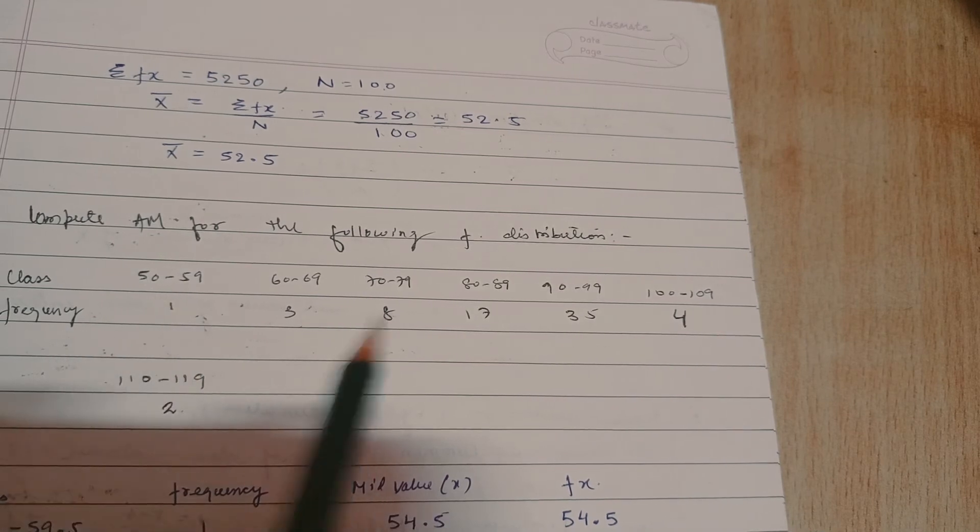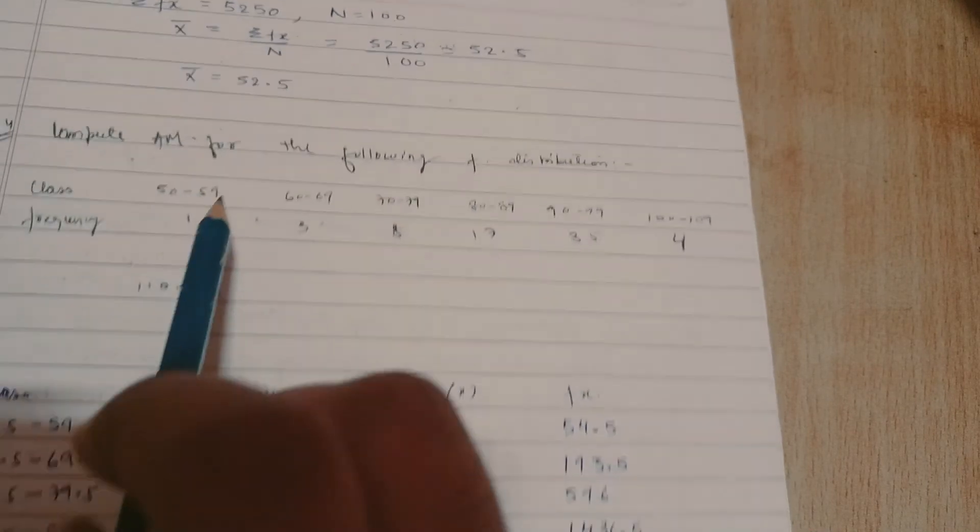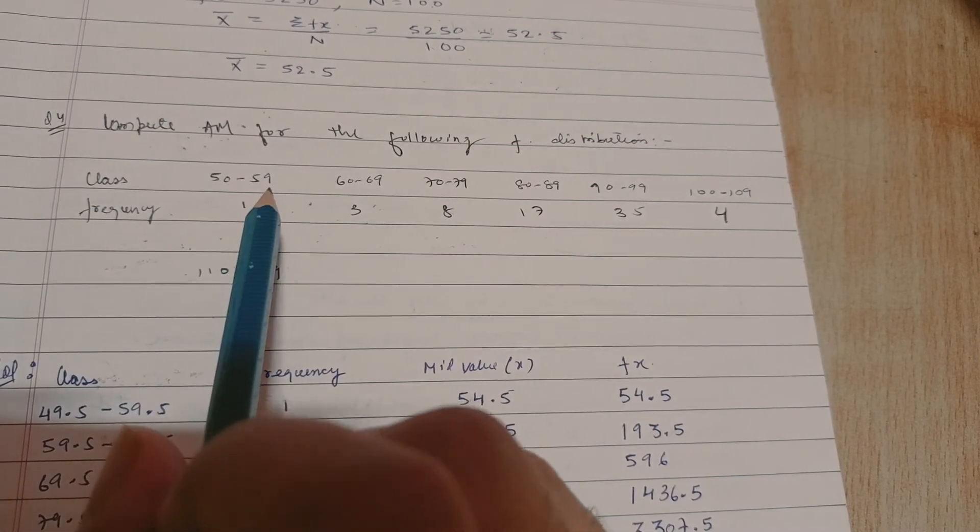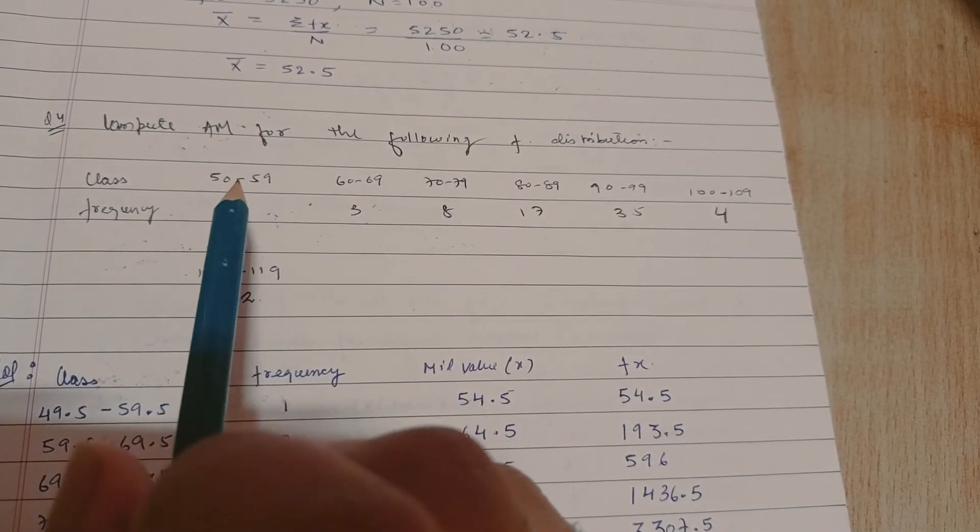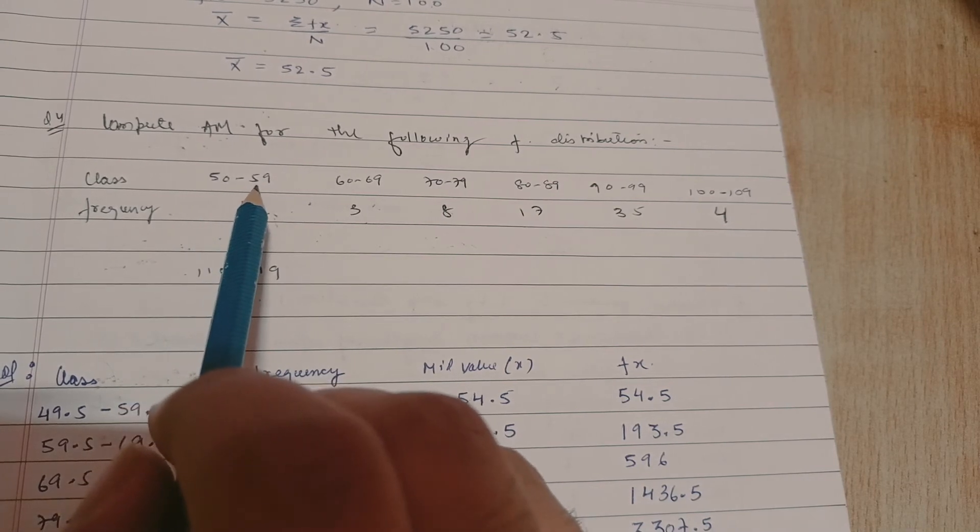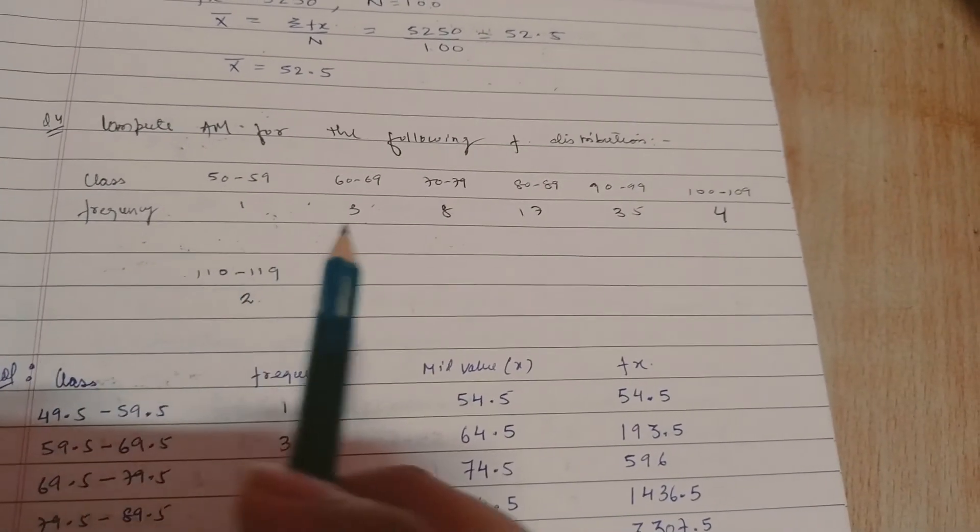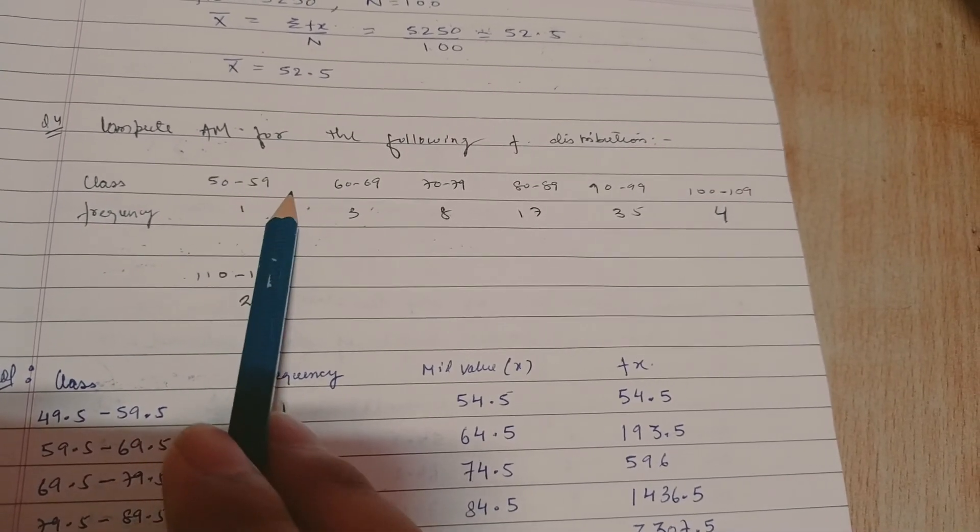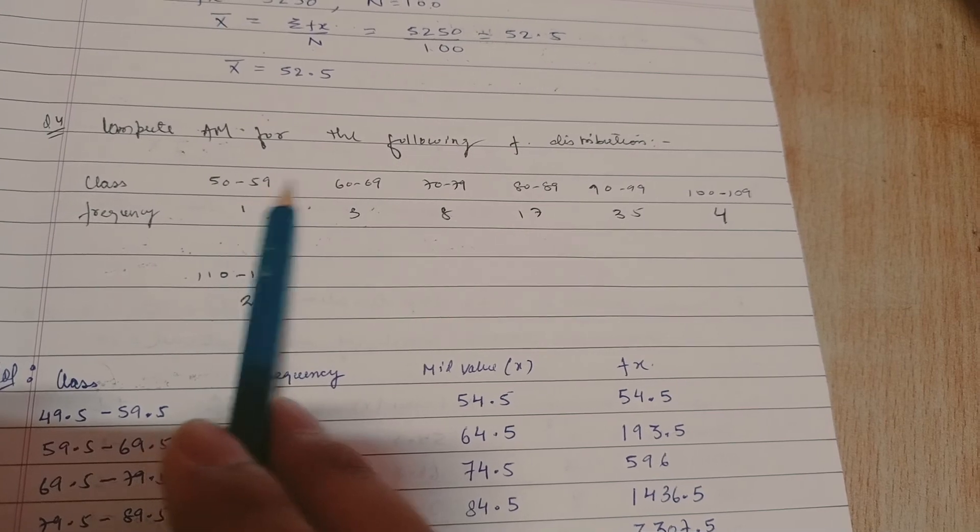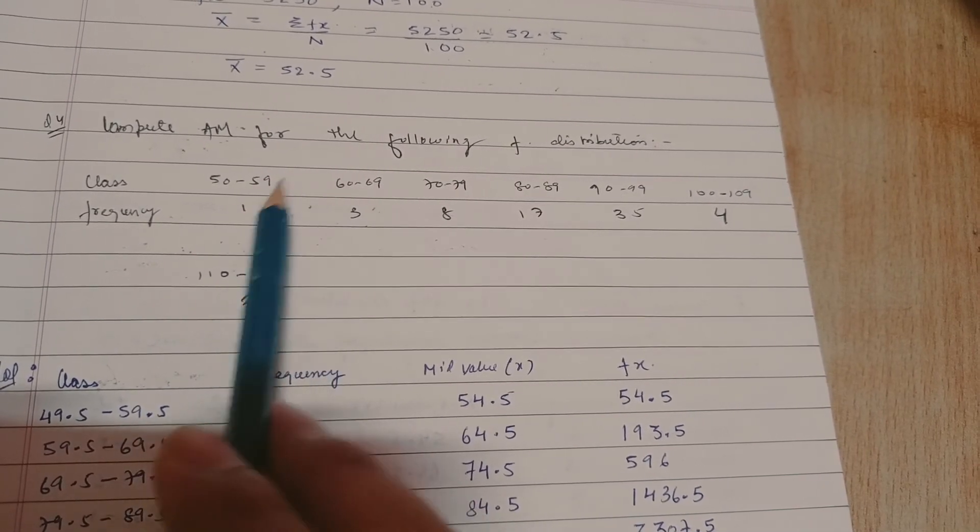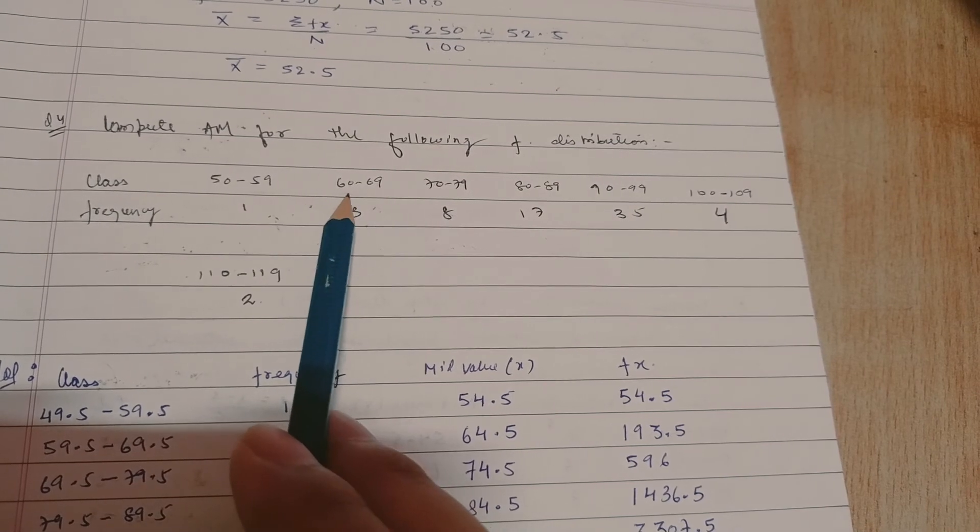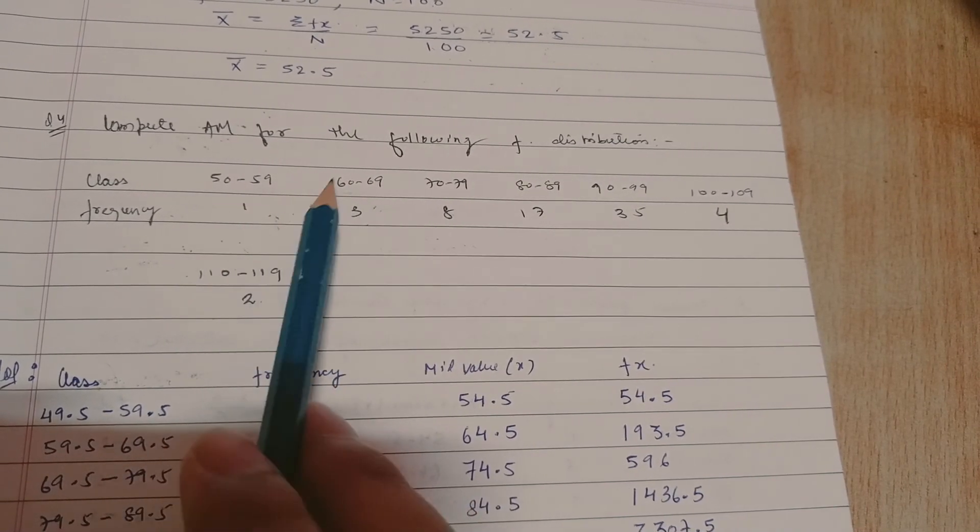Now let's take another example. This example is very important. Always while solving, see that the classes are inclusive. Like 50 to 59 and the next class is 60 to 69. See, 59 and 60, these are not same. So we need to make some changes so that we have continuous classes.